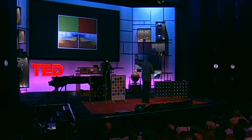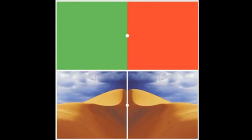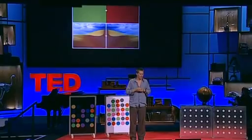I want you to notice that those two desert scenes are physically the same — one is simply the flipping of the other. Now look at the dot between the green and the red, and stare at it. Your brain is learning — it's learning that the right side of its visual field is under red illumination, and the left side is under green illumination. Now, when I tell you, look at the dot between the two desert scenes. They don't look the same anymore. Why? Because your brain is seeing that same information as if the right one is still under red light and the left one is still under green light. That's your new normal.